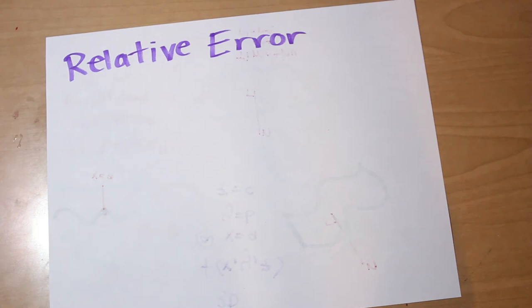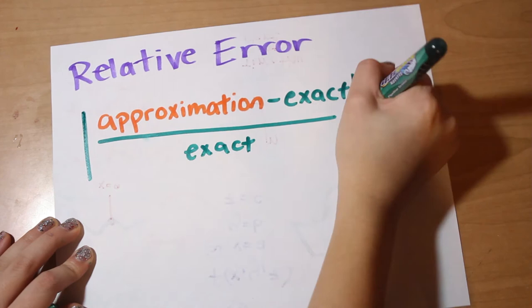Relative error is equal to the absolute value of approximation minus the exact value divided by the exact value. You don't often use relative error, but it is a good skill to have.